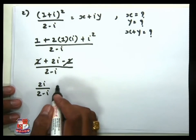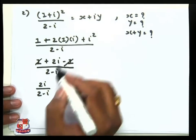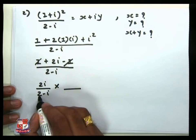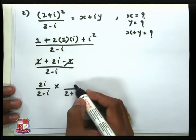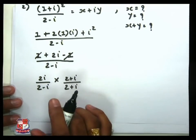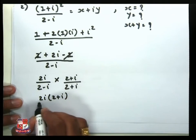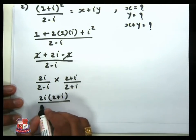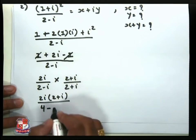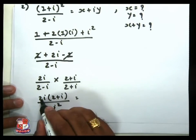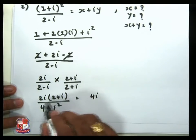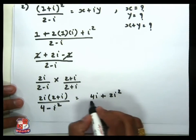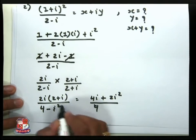Now we take the rationalization to express our equation in the form x + iy. We multiply numerator and denominator by the conjugate (2+i): 2i·(2+i) divided by (2−i)(2+i). The denominator uses the identity (a−b)(a+b) = a²−b², giving 2² − i² = 4 − i².